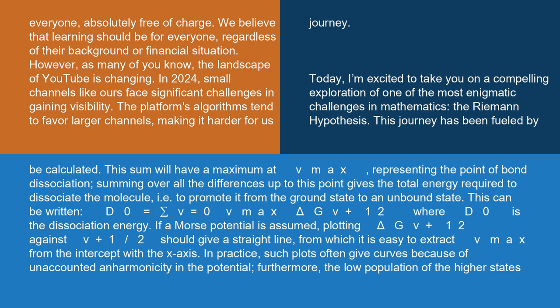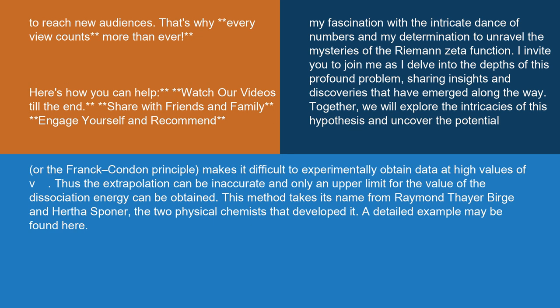In practice, such plots often give curves because of unaccounted anharmonicity in the potential. Furthermore, the low population of the higher states, or the Franck-Condon principle, makes it difficult to experimentally obtain data at high values of v.